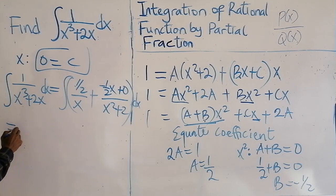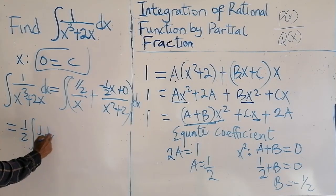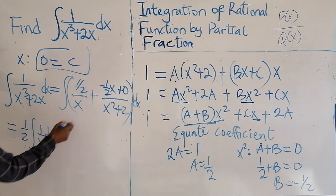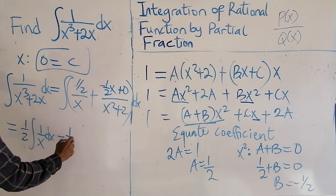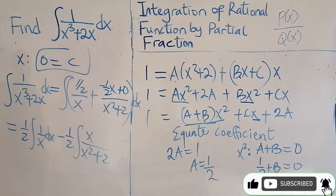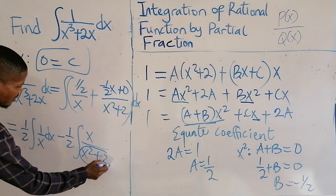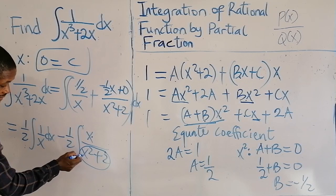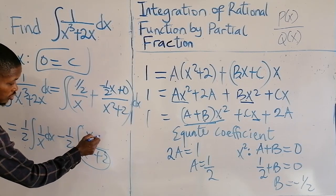So this is equal to half integral of 1 over X dX. Here we can take the minus half outside and that will be this times X over X squared plus 2. So what I'm going to do here, the derivative of the denominator here is 2X. Here is X.